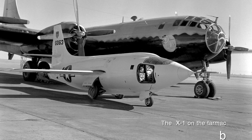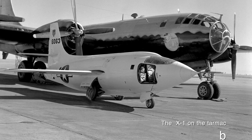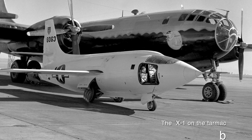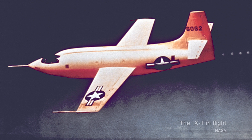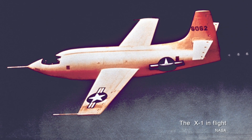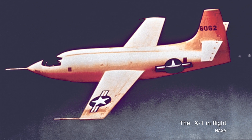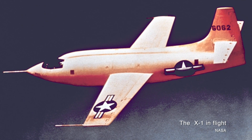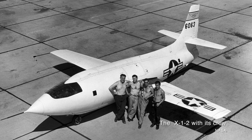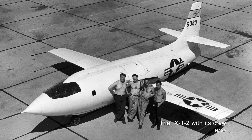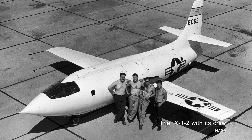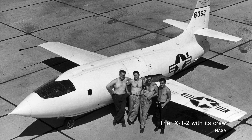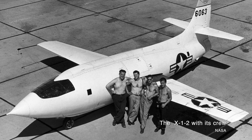Built by Bell Aircraft in the mid-1940s, the X-1 was designed after a bullet, because physicists knew that a bullet leaving the barrel of a gun flies faster than sound. Therefore, replicating that basic shape in an airplane — with very stubby little wings and a rocket engine — and filling most of its body with fuel was a surefire way to get an aircraft to fly faster than sound and hopefully not fall apart in the process.